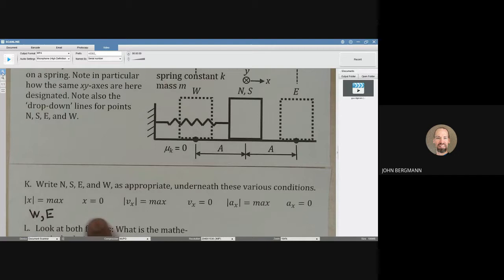X equals zero at points north and south. You can see that in this picture here. X equals zero at points north and south.